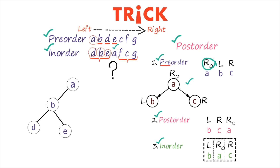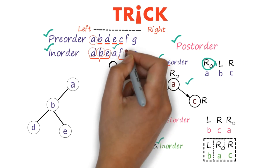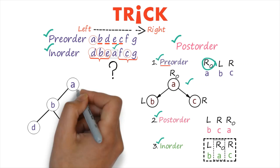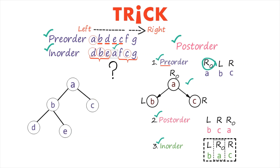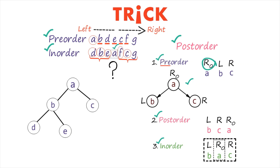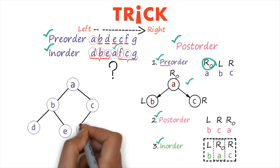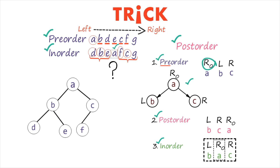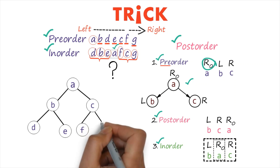Moving forward, we are traversing the pre-order from left to right. The next node is C. According to the in-order traversal, C is at the right side of the root, so that is its location. Next is F — F exists at the right side of the root but the left side of C, so that is the position of F. Finally, G is at the right side of the root and also at the right side of C, so that is its location.